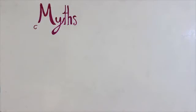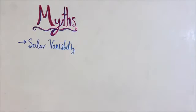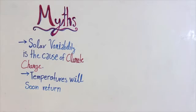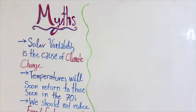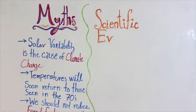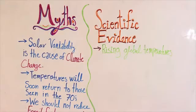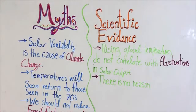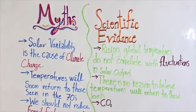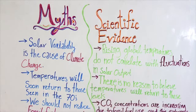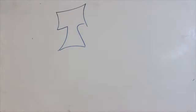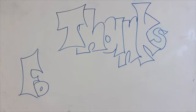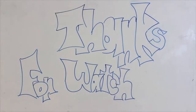Climate change cannot solely be attributed to the solar cycle. It's important to consider the effects of carbon dioxide and other greenhouse gases on global temperatures. As individuals, we each have the power to advocate for thoughtful discussions of science. We can promote energy efficiency, low-carbon technologies, and other methods for reducing greenhouse gases in the atmosphere today, rather than waiting for temperatures to return to those experienced in the 70s. Thank you for tuning in to Understanding the Role of Solar Variability on the Climate.